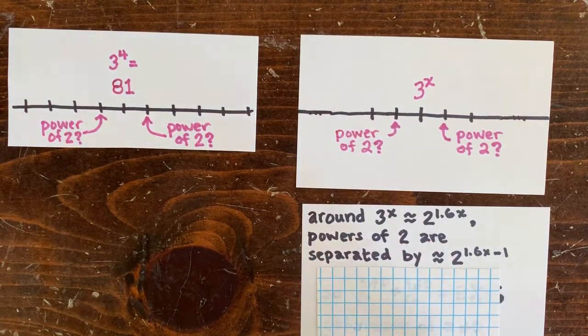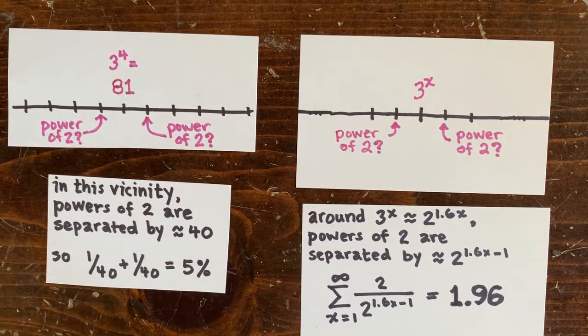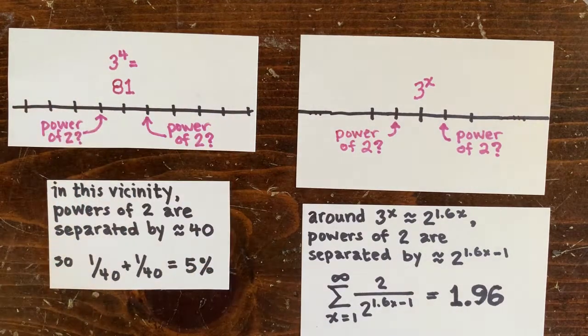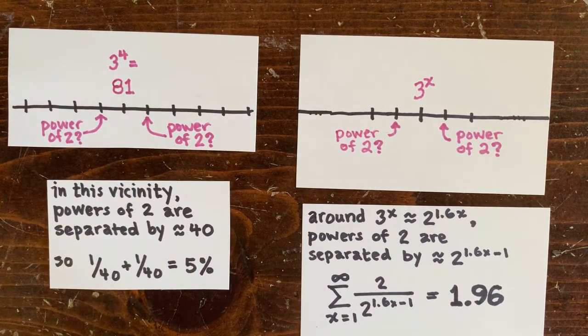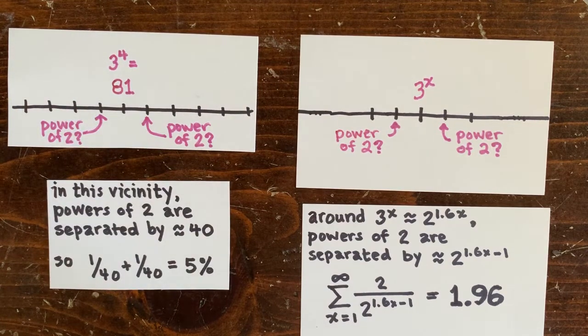So for example, take 3 to the 4th equals 81. What's the chance that 80 is a power of 2? At that level, there's a power of 2 about every 40th number. You know, 32, 64, 128. So the chance we could say is 1 in 40. Same for 3 to the x plus 1.